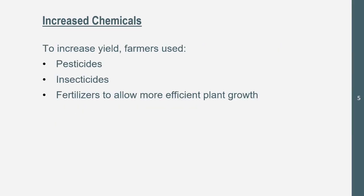There are increased chemicals, which we just talked about a second ago. To increase yield, farmers use pesticides, insecticides, and fertilizers. Pesticides don't let the plants get fungus. Insecticides kill the insects that try to eat the plants. And fertilizers allow for more efficient plant growth and keep the soil from losing its fertility.